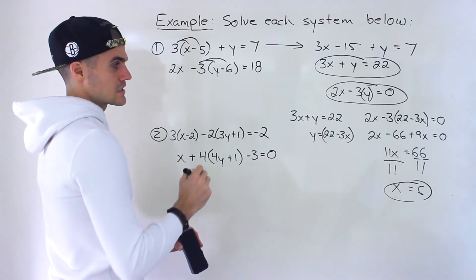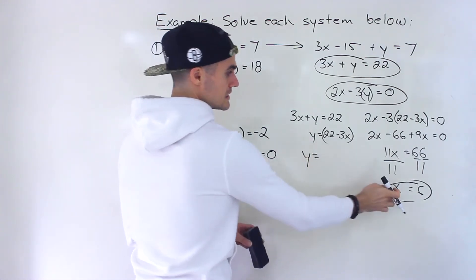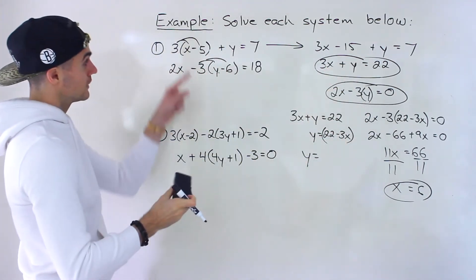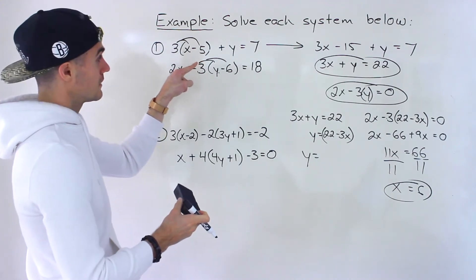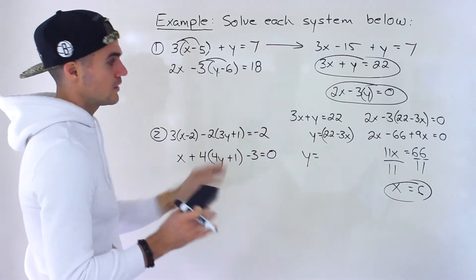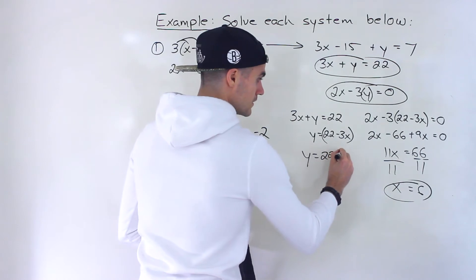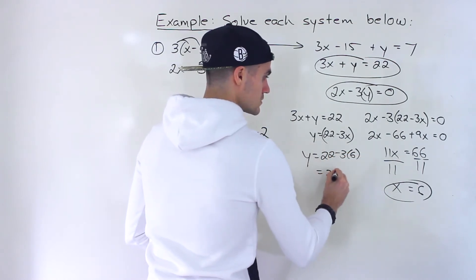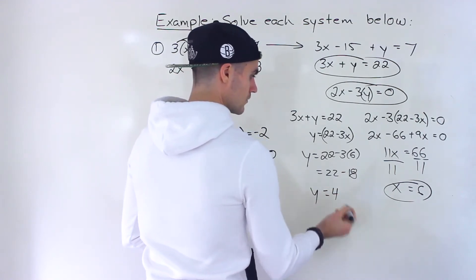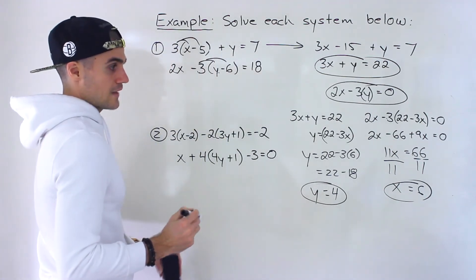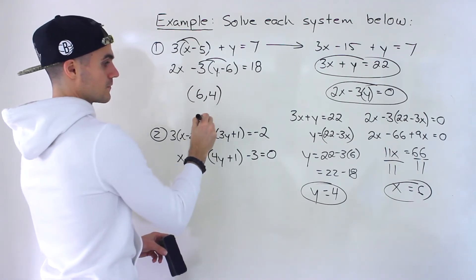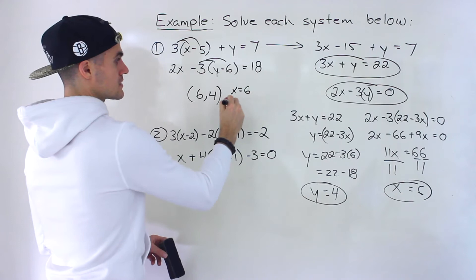The x value is 6. For the y value, we have it isolated: y equals 22 minus 3x. You could plug 6 in here or into either of the original equations and you'll get the same y value. Plugging in: 22 minus 18 gives us 4. So the point of intersection between the two lines is (6, 4) — x equals 6, y equals 4.